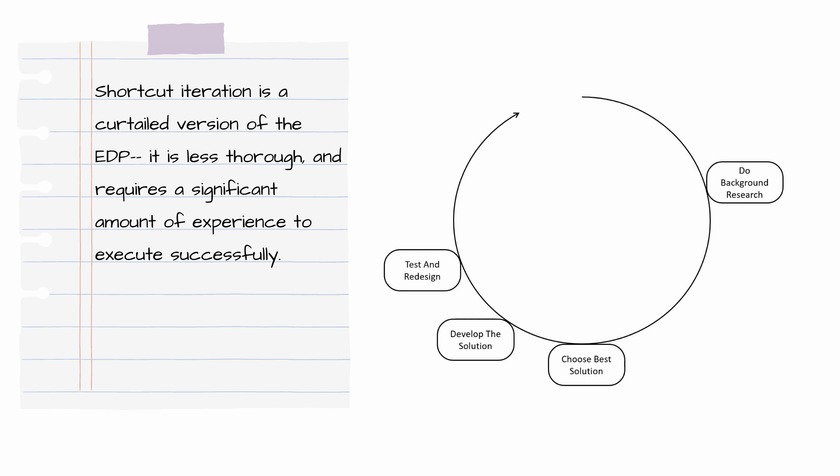One thing to be aware of is something called shortcut iteration, which is basically a shortened version of the engineering design process that skips a lot of steps. It's really common when you're trying to go back through the engineering design process and don't have enough time to go through all of the steps, or when you want to see results quicker. What that does is it actually reduces the quality and accuracy of the results you get from the process, and it could cause you to go in the wrong direction. It's a lot less thorough, and it takes a lot more experience to pull off successfully.